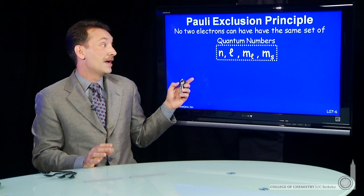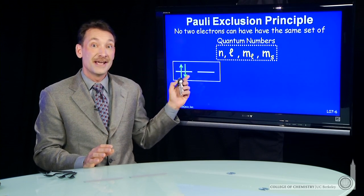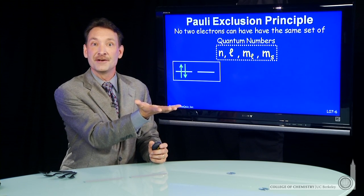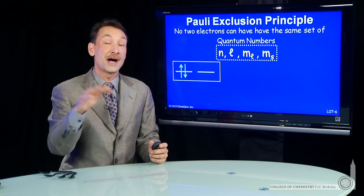Now, there's other rules that they follow. For instance, if there's degenerate energy levels, and we know when we have the p orbitals, there's three that are of the same energy. How do the electrons choose to occupy those?